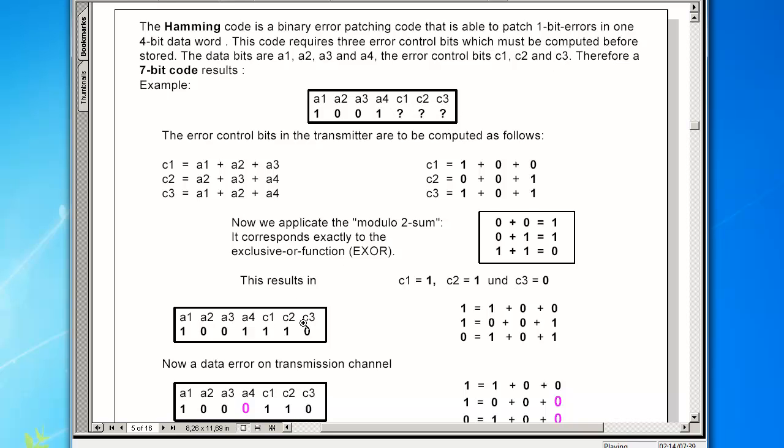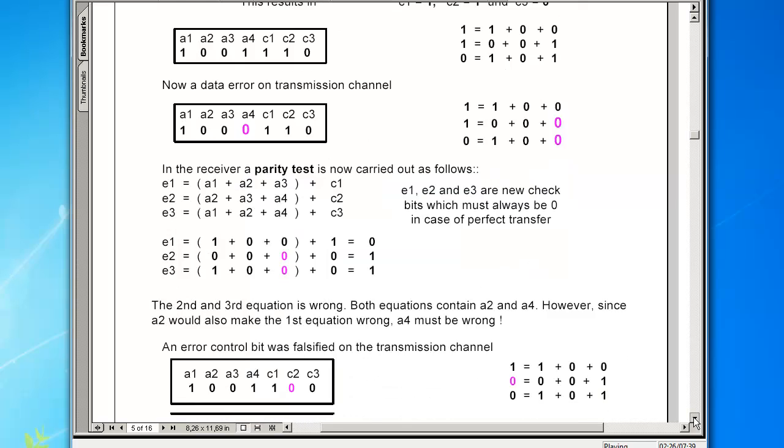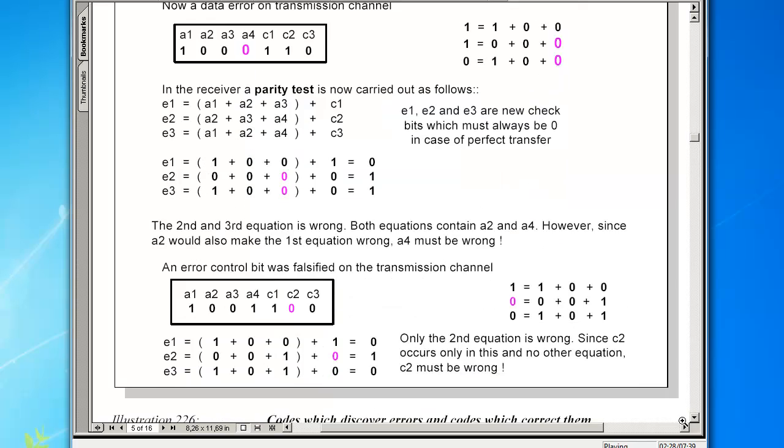Practically all these codes that correct errors essentially follow the example described. Upstream information is calculated according to a preset pattern and the data are stored. This information is used to recalculate the bits after being read. The check bit pattern makes it possible to locate the site of the error and recognize the original correct value.